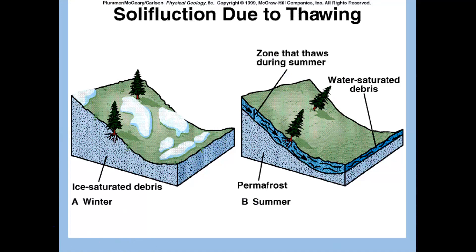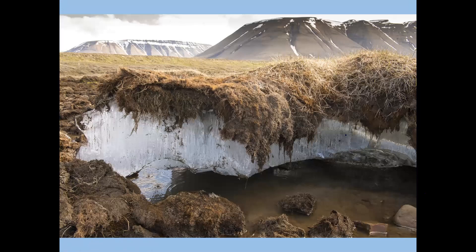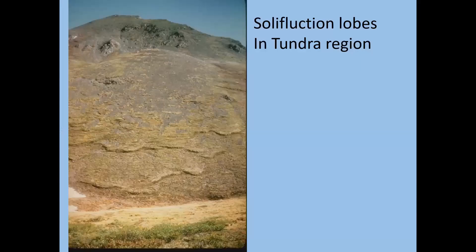Solifluction occurs in Arctic and Alpine areas where moisture is permanently frozen. During the short summer, the top layer of soil begins to thaw while the ice below acts almost like a water slide or glide plane, causing the ground to flow downslope seasonally. Permafrost is permanently frozen soil moisture — shown here in a feature called a pingo. Global warming is causing permafrost to melt, creating all sorts of disasters. You get lobes of material that are seasonally displaced down these slopes.